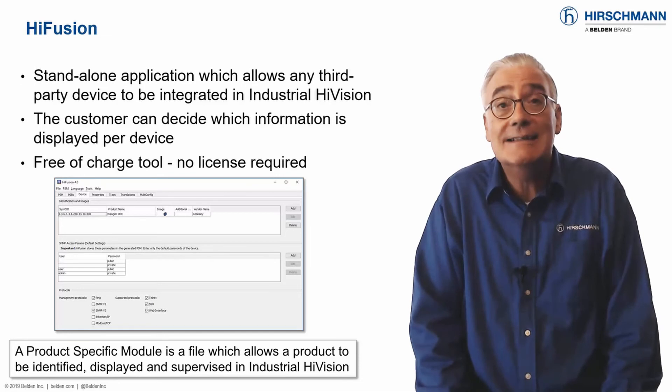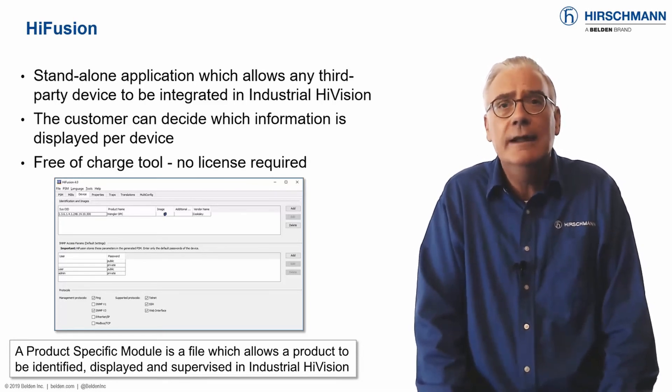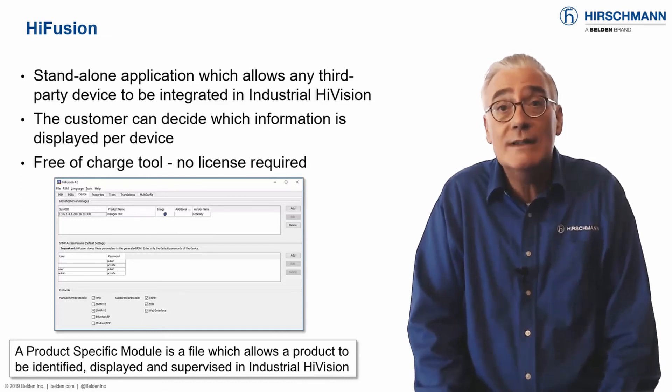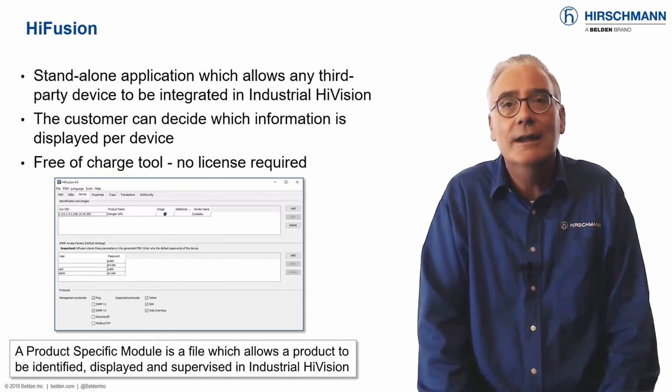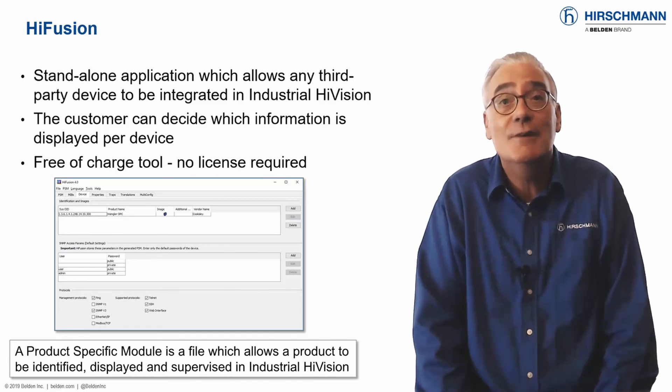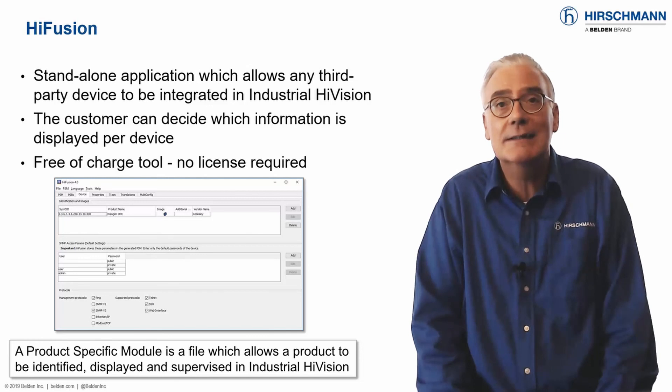HiFusion is a stand-alone application which can generate the code required to configure and supervise a third-party device. If you have no SNMP knowledge, the HiFusion wizard will generate basic supervision code. If you are an SNMP expert, the sky is the limit for supervision and configuration code. HiFusion includes a test environment, so you do not need to touch your live installation.